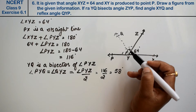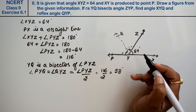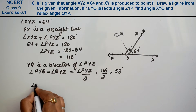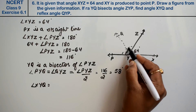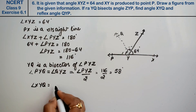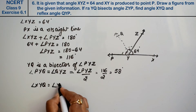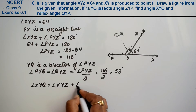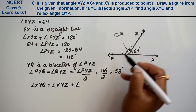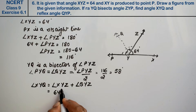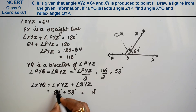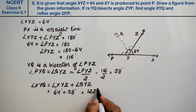अब हमें angle XYQ निकालना है। Angle XYQ कैसे निकलेगा — XYZ को QYZ में plus कर देंगे। XYZ कितना था — 64 degree, और QYZ कितना था — 58 degree। तो XYQ = 64 + 58 = 122 degree.